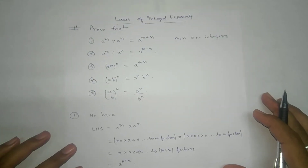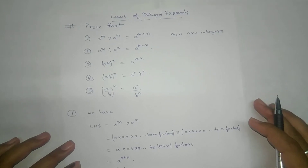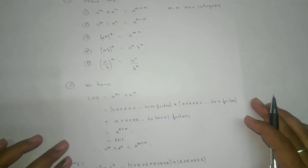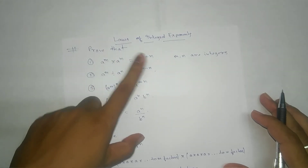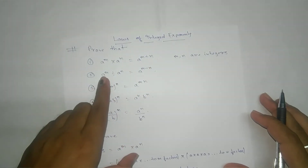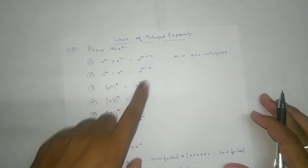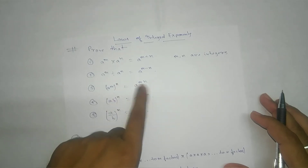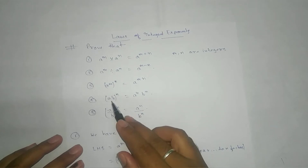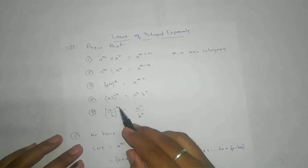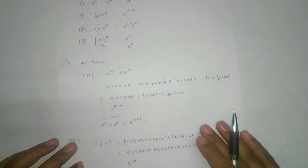There are five laws, and we are going to see them one by one. The first one: a to the power m into a to the power n equals a to the power m plus n. When multiplying and the bases are the same, powers are added. When the bases are the same in division form, we use subtraction. The power of a power gives multiplication, and this power will distribute — meaning a to the power n times b to the power n, and also a to the power n divided by b to the power n.